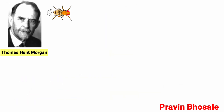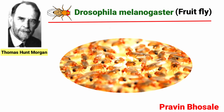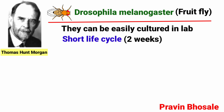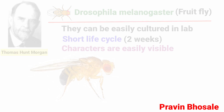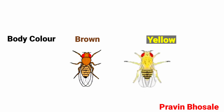Morgan selected Drosophila melanogaster, called the fruit fly, because they can be easily cultured in the lab, have a short life cycle of two weeks, and their characters are easily visible under low power. In body color, there are two contrasting characters: brown and yellow. Brown color is dominant and yellow color is recessive.